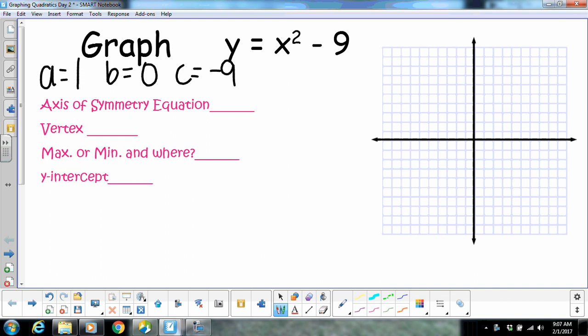Alright, so now we're going to do opposite B. So the opposite of 0 is still 0 over 2 times 1. And 0 over anything is 0. So your axis of symmetry was 0. Is everybody good on finding your axis of symmetry?